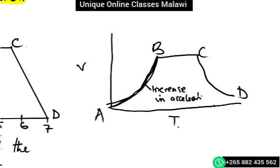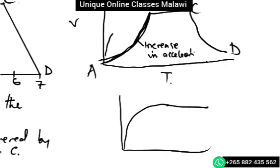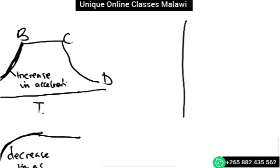Whereas if the curve bends the other way, like this, the area underneath would show decrease in acceleration. So a curve bending upward is increase in acceleration, and a curve bending downward is decrease in acceleration.